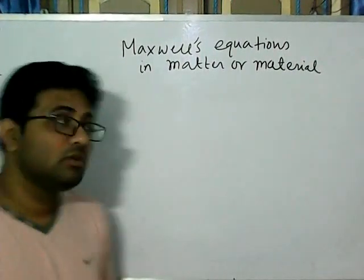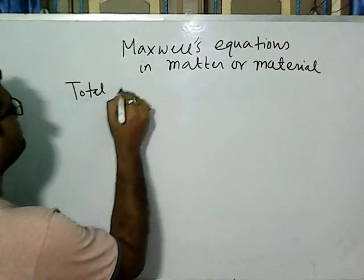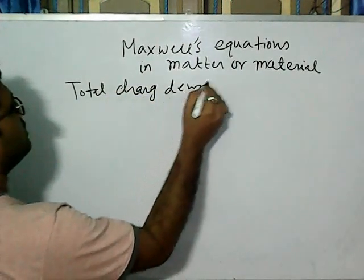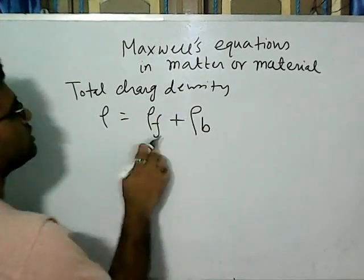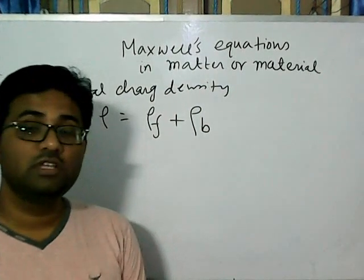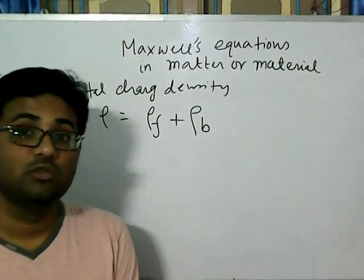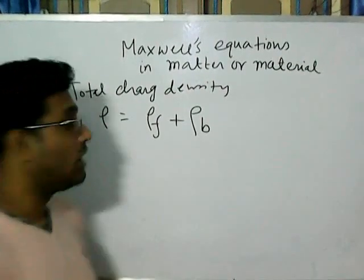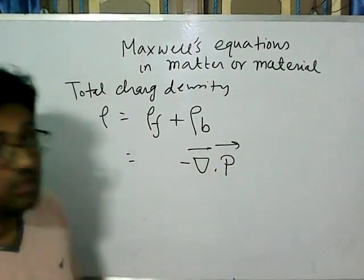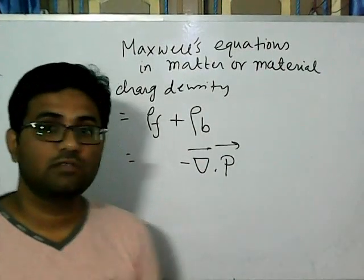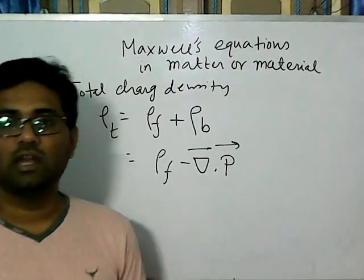So what will be the total charge in any material? The total charge density rho equals rho_F plus rho_B. Rho_F is the charge density due to free charge present in the material, and rho_B is the bound charge density due to the bound charge. From the last class, the bound charge rho_B is minus the divergence of the polarization vector P. So total charge density rho_T equals rho_F minus ∇·P.